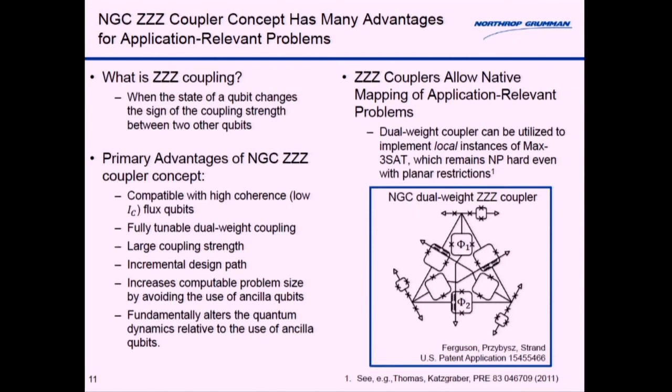Now moving on to the ZZZ coupling. What is a ZZZ coupling? It's when the state of one qubit changes the sign of the coupling between two other qubits. This is a very important type of interaction to generate because it allows native embedding of 3SAT problems.